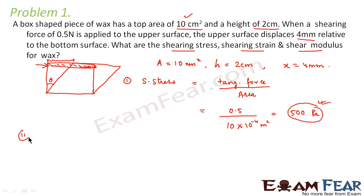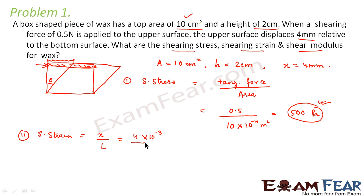Now let us calculate shearing strain. By definition, shearing strain is equal to the small displacement X divided by the initial length. The small displacement is 4 millimeters, that is 4 times 10 to the power minus 3 meters. The initial length is nothing but the height, which was 2 centimeters, that is 2 times 10 to the power minus 2 meters. So shearing strain comes out to be 0.2.